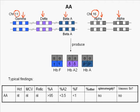Two alpha globins and two gamma globins combine to form the fetal hemoglobin or hemoglobin F tetramer. Two alpha globins and two delta globins combine to form the hemoglobin A2 tetramer, and two alpha globins and two beta globins combine to form the hemoglobin A tetramer.